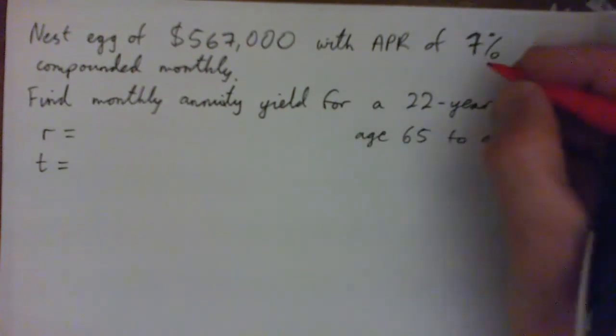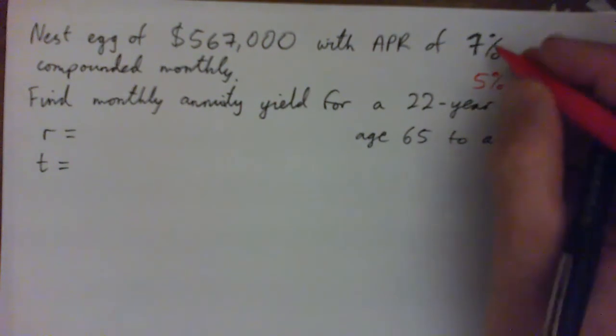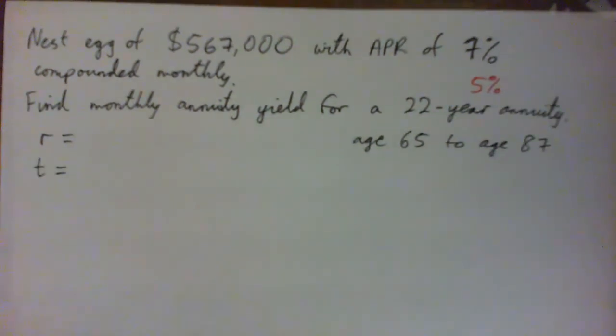But then, like I said, a lot of folks are going to try to take out maybe 5% or something like that just to keep it below the expected return so that the money doesn't run out. But using our formula, let's figure out what this will pay each month.